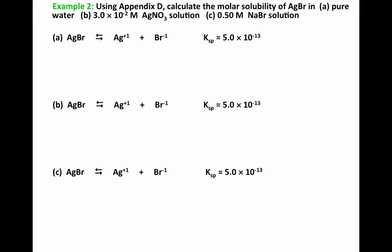you always want to write your Ksp expression. We know that silver bromide is a solid — it's only slightly soluble — so it's at equilibrium with its ions: Ag+ and Br-. Looking at Appendix D in the back, we find the Ksp is 5.0 times 10 to the negative 13. The overall expression is: Ksp equals the concentration of Ag+ times the concentration of Br-.